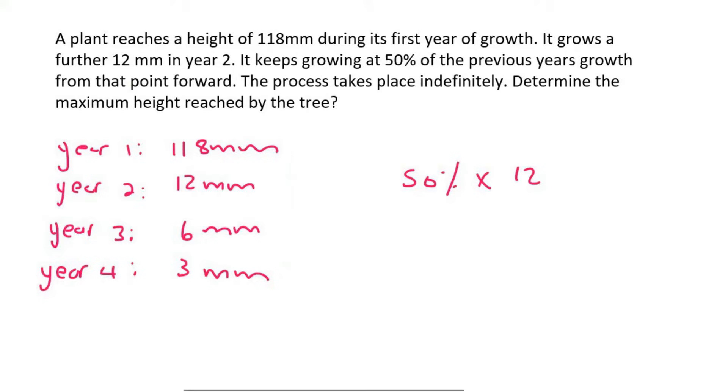I'll prove that to you. If we look at the ratio from 12 and 118, you would go term two divided by term one, which is 12 over 118, 6 over 59. Then if we use term three divided by term two, that would be 6 over 12, which is a half. And if we go term four over term three, that would be 3 over 6, which is a half.